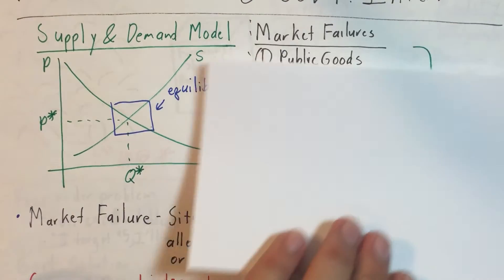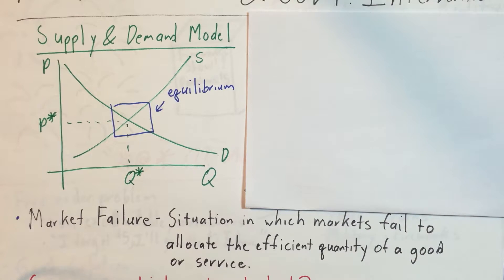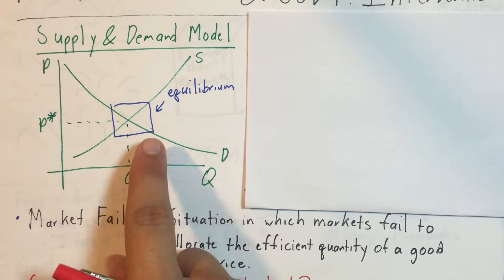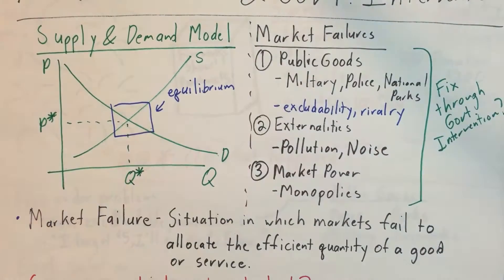So what exactly is a market failure? For today we're going to define a market failure as a situation in which markets fail to allocate the efficient quantity of a good or service — basically where we don't get an efficient outcome and markets are not meeting our needs appropriately.